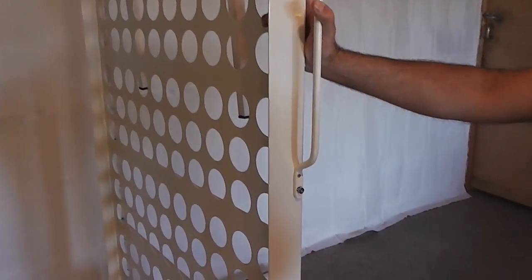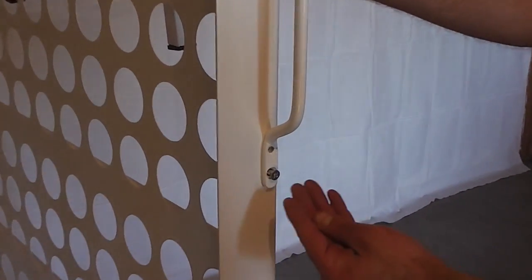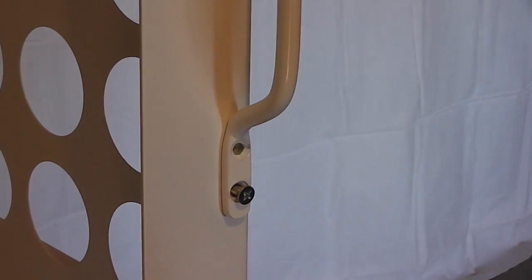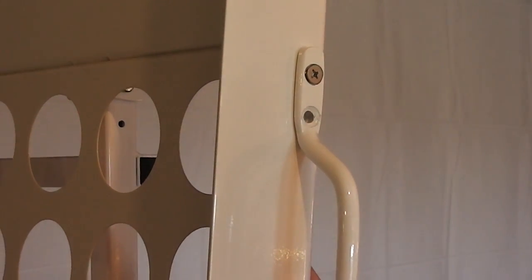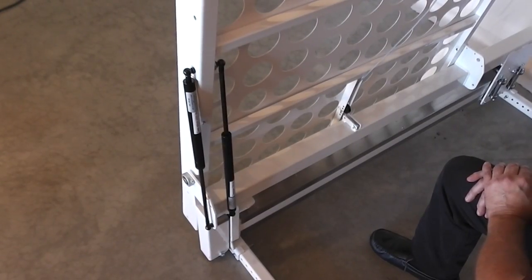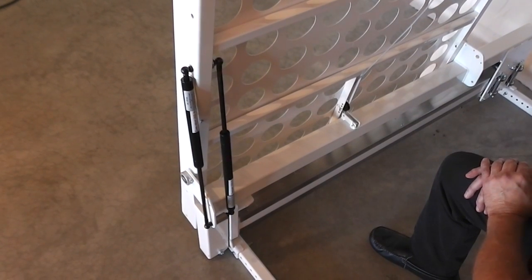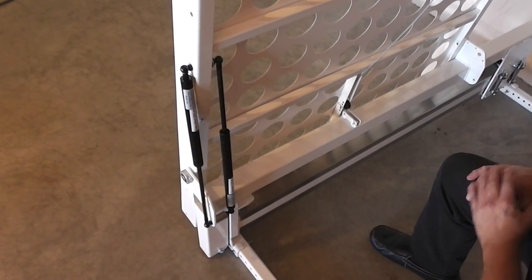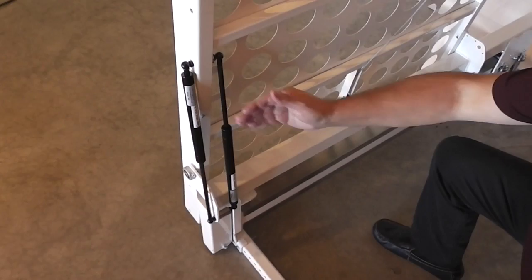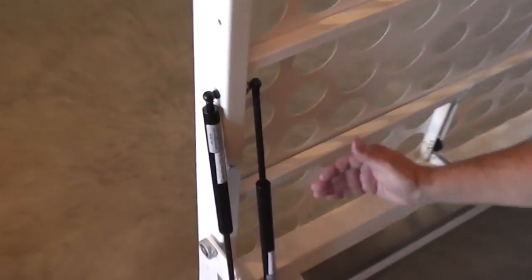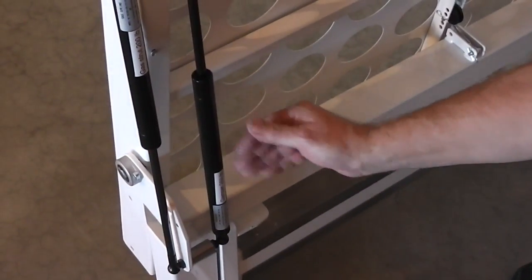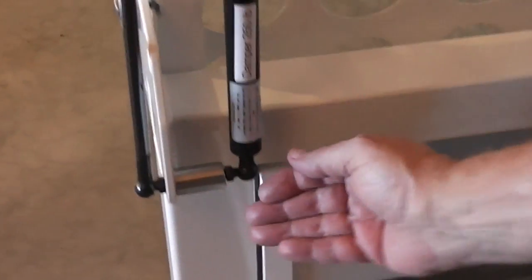Attach the handle using the four flathead screws that are in the box. The next step is to attach the gas strut and the damper. Please notice that the cylinder for the gas strut is on the top, the cylinder for the damper is on the bottom. Attach them both with the spacer in between.